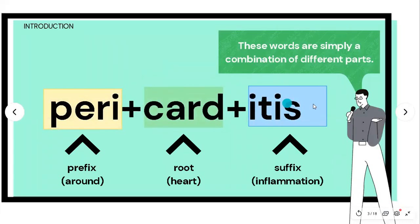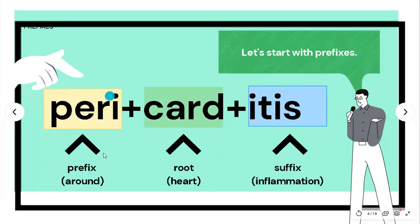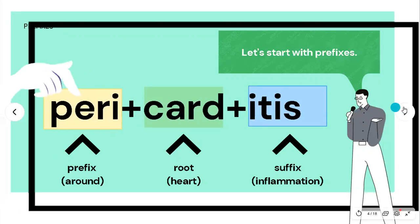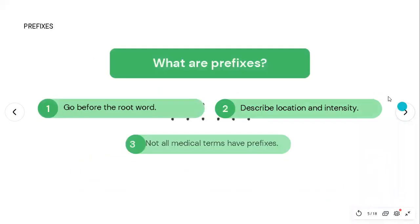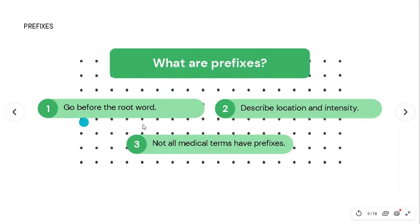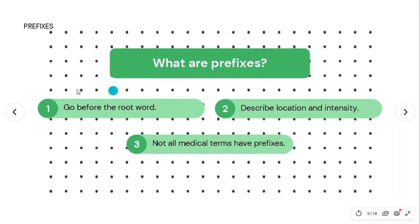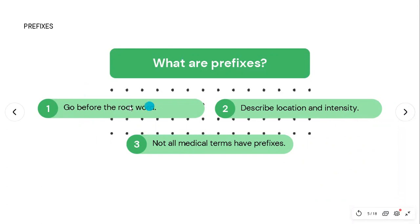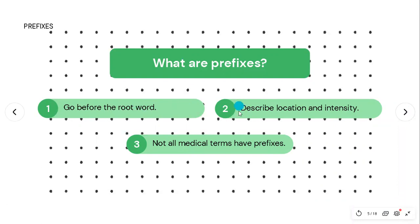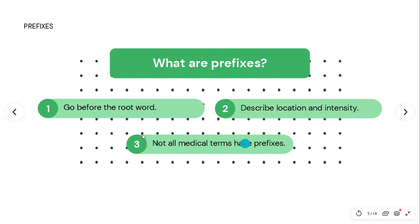We're going to start with the first element, which goes at the beginning of the word: the prefix. There are three things we need to know about prefixes. First, they go before the root word — in other words, at the beginning of the word. Second, they generally describe location and intensity.